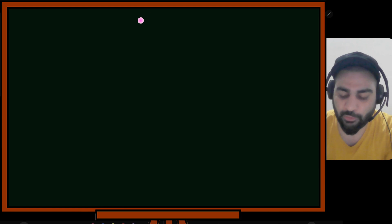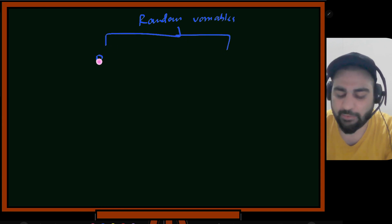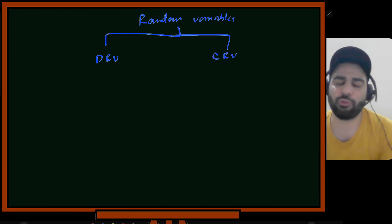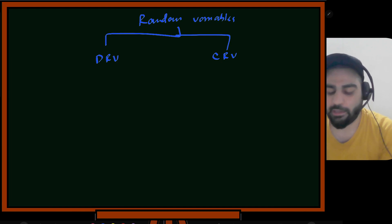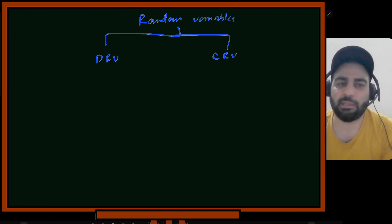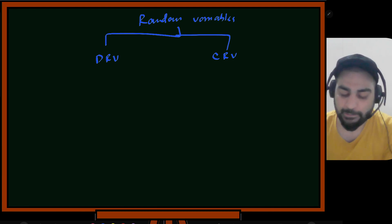In this session we continue from previous discussions on expectations and start our discussion on random variables. There are two types of random variables: discrete random variable and continuous random variable. There are hybrid random variables also, but if you know discrete and continuous, you can tackle hybrid ones too.